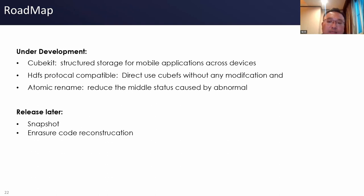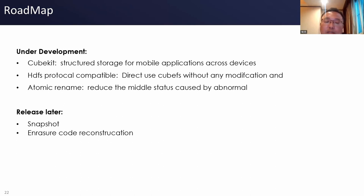The last page is about the KubeFS roadmap. There are several important components in development. First is KubeKit, a structured storage for mobile applications or IoT devices. Second is HDFS protocol compatibility, allowing direct use of HDFS clients to access KubeFS without any modification. Third is atomic rename, which is recoverable when intermediate states are caused by routines being interrupted in distributed environments. The two main upcoming releases are the snapshot feature mentioned before, and erasure code subsystem reconstruction to reduce the number of deployed components and make deployment easier. Thank you.